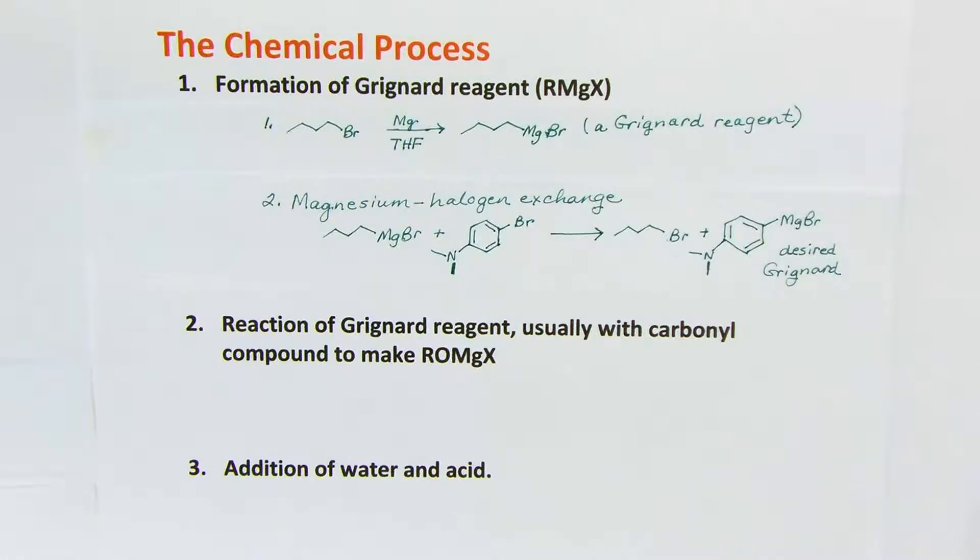First we will make a Grignard from N-butyl bromide in the usual way, that is adding magnesium to an alkyl halide in the presence of an ether, THF or tetrahydrofuran. That makes a Grignard reagent, but not the one we wanted.